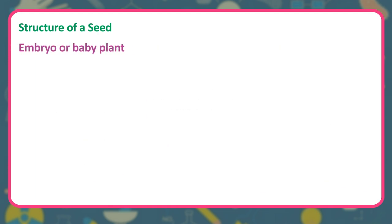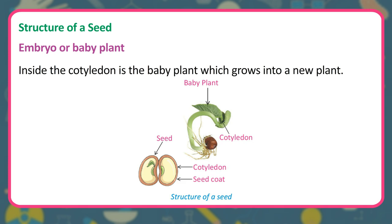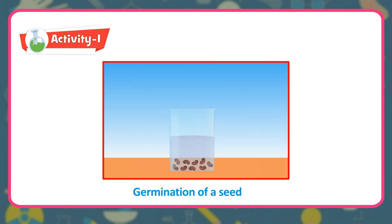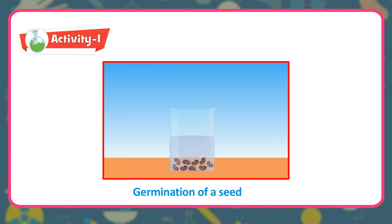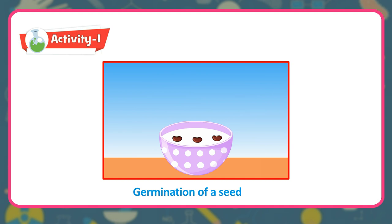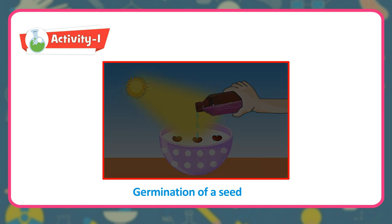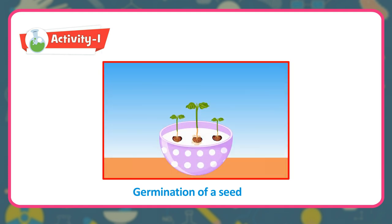Inside the cotyledon is the baby plant or embryo, which grows into a new plant. Activity: Soak a few kidney beans, rajma, or gram seeds overnight. They will swell up and become soft after absorbing water. Now keep them on moist cotton wool in a bowl. Keep the bowl in sunlight and sprinkle water on the cotton daily. You will see that the seeds develop into seedlings.